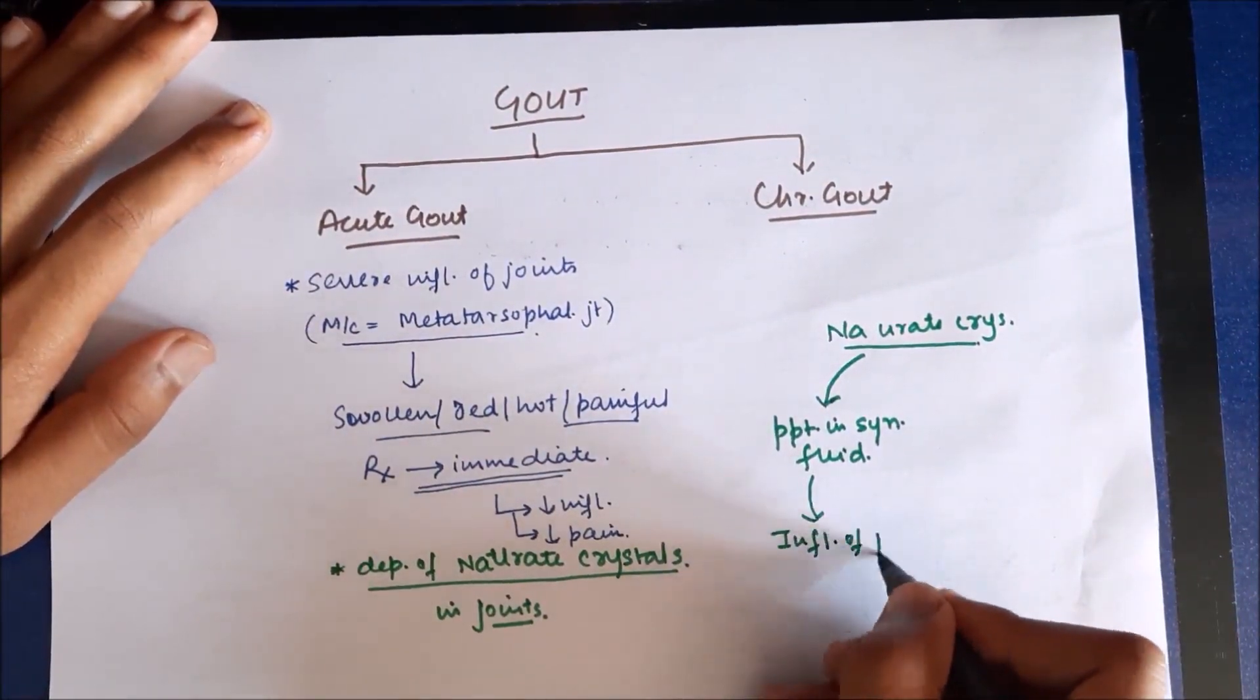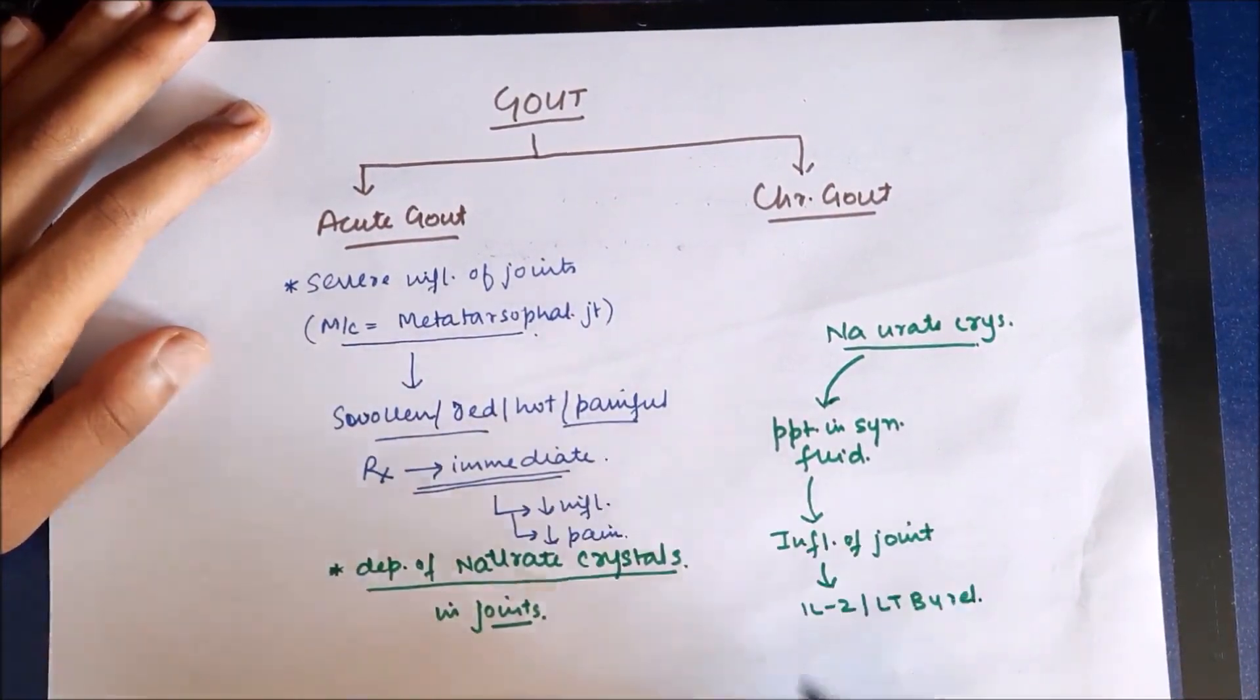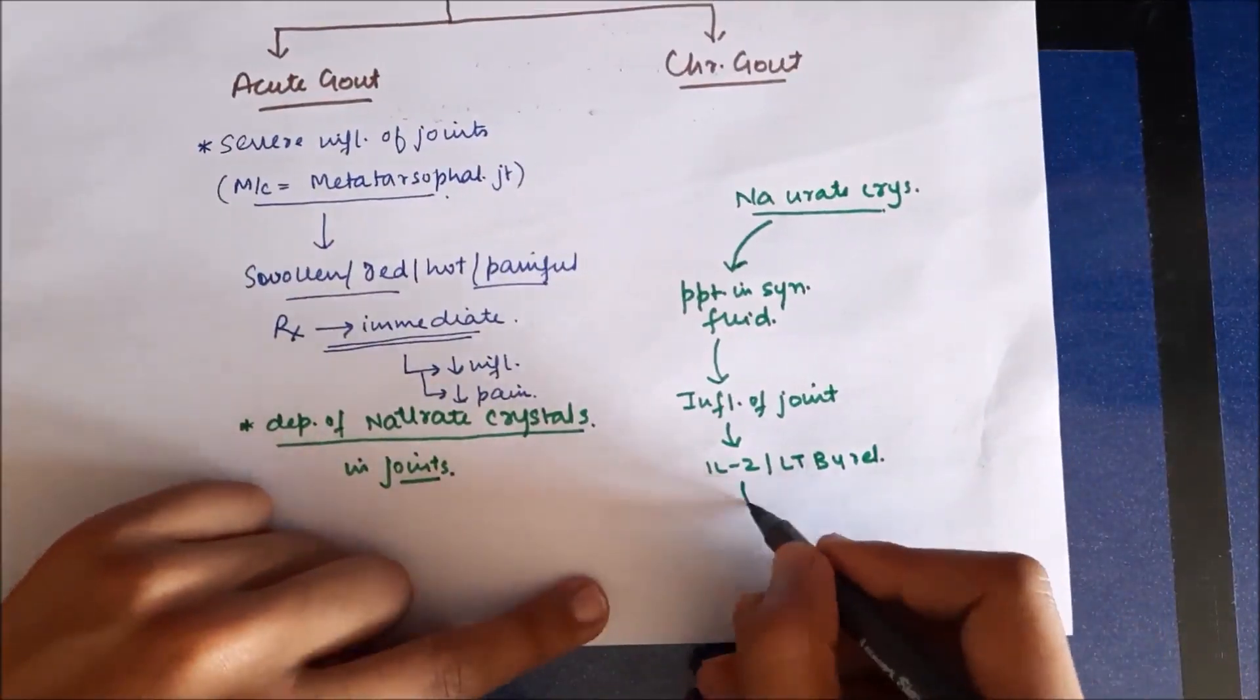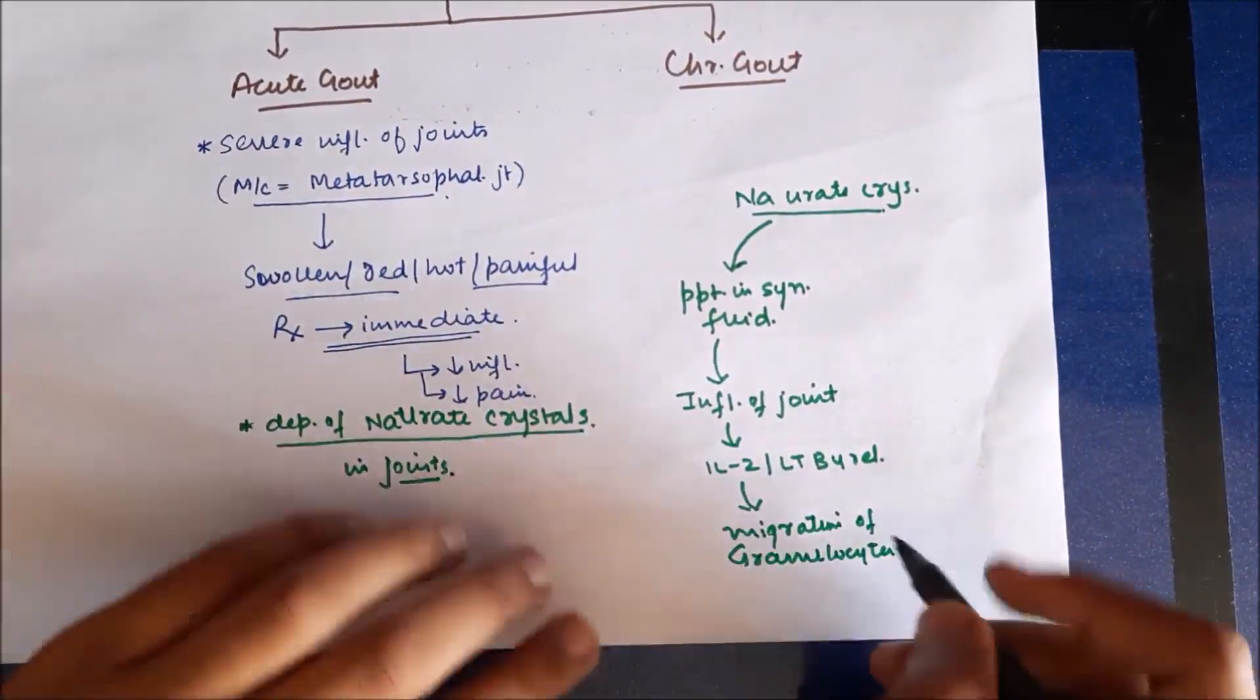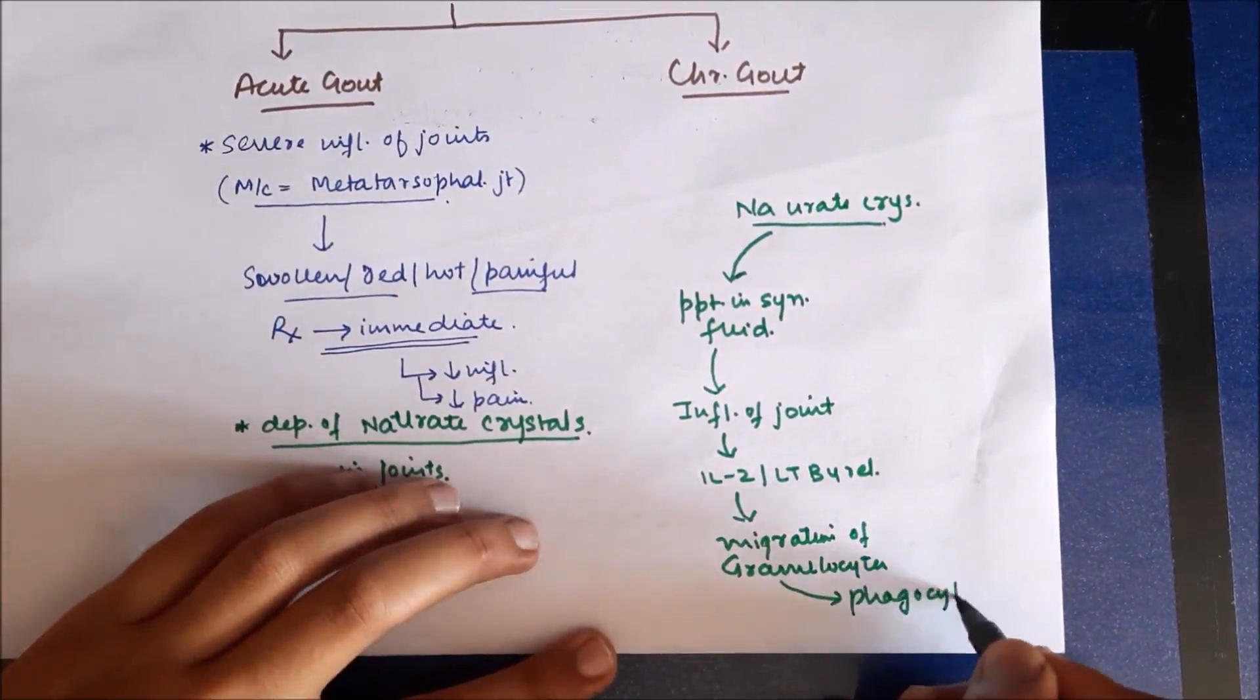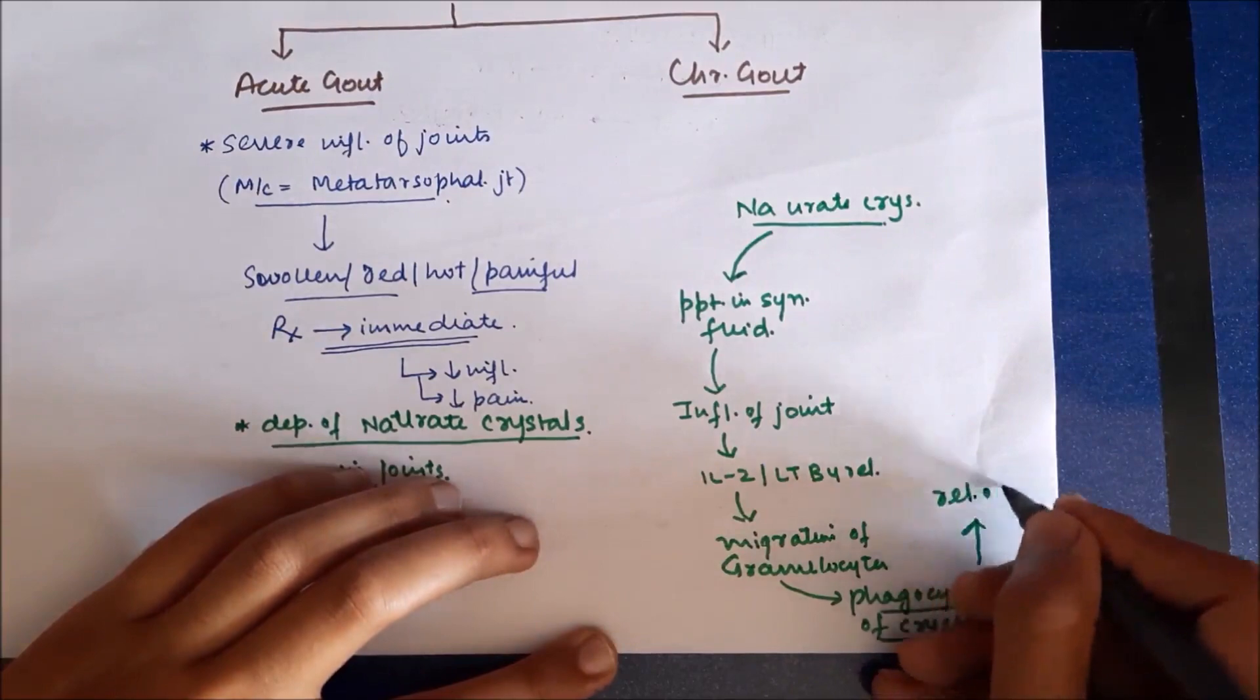Now these substances cause migration of granulocytes in the joint which try to eliminate these crystals by phagocytosing them. So there is phagocytosis of these crystals, and after phagocytosing, they cause release of certain glycoproteins which will increase the production of lactic acid as well as production of certain lysosomal enzymes.